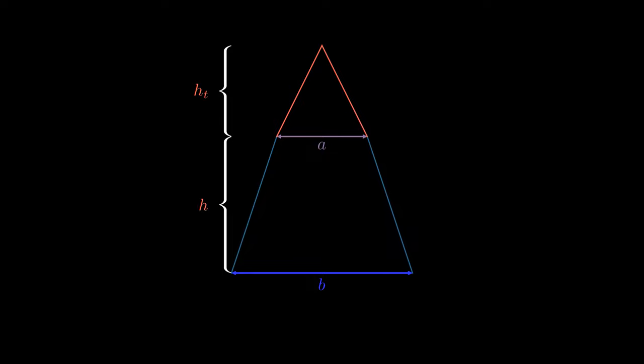The volume of the truncated pyramid can easily be shown to be the volume of the full pyramid minus the pyramid section that was truncated off.